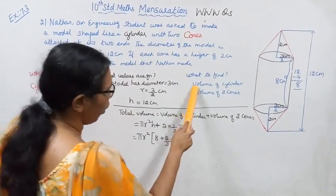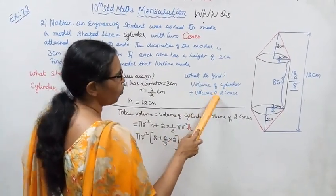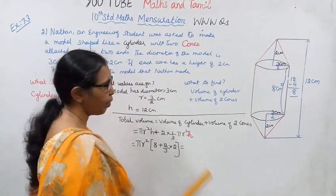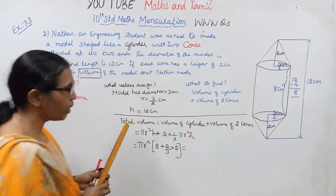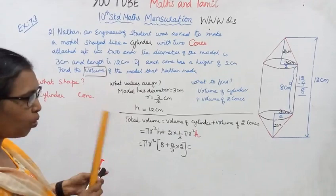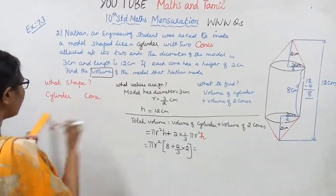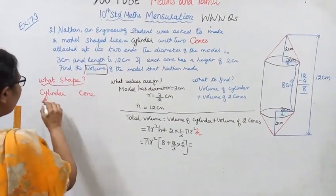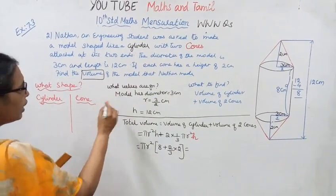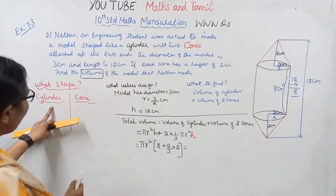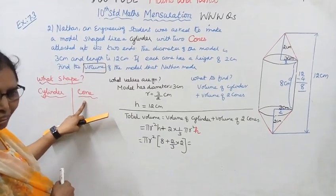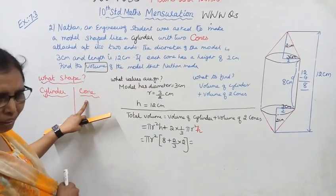What to find? Volume of the model. The model is made of a cylinder and cones, so we need the volume of the cylinder plus the volume of 2 cones. Volume of cylinder is π r² h. Volume of cone is 1 by 3 π r² h.